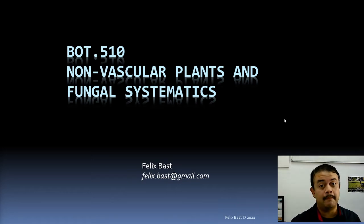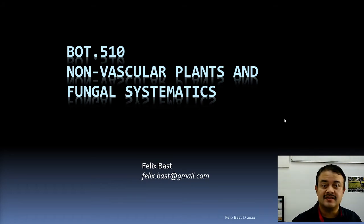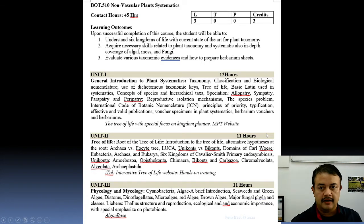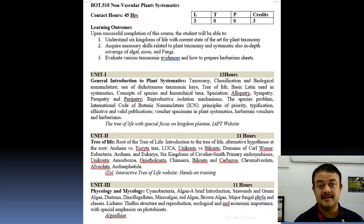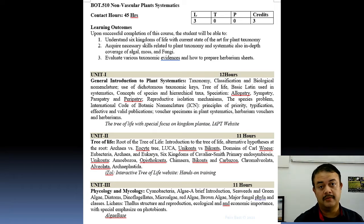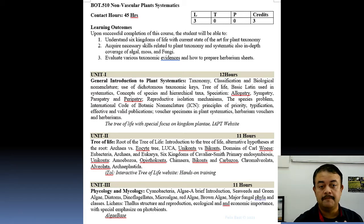You cannot call fungus a plant because it is not photosynthetic, though it is a sessile, non-vascular organism. In this course, we will see the general introduction to plant taxonomy and systematics in the first unit — all about ICN and different kinds of taxonomy, and the difference between taxonomy, biodiversity, classification, and systematics.